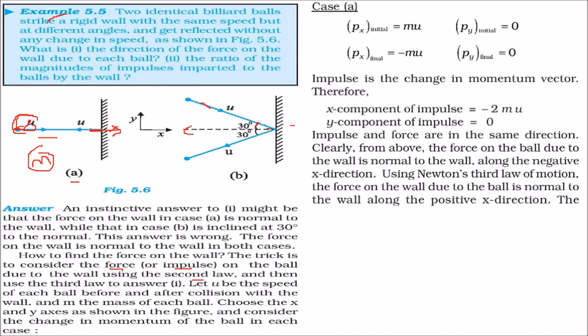Then this strikes the wall and comes back, returns back. So the velocity, first of all, it was in this direction. Then it will be in opposite direction. So the Px, in this case, will be this direction. Py is 0 because this is normal to the wall.